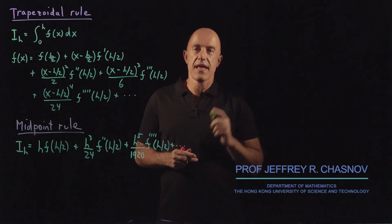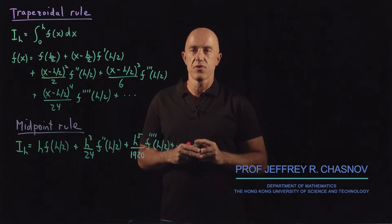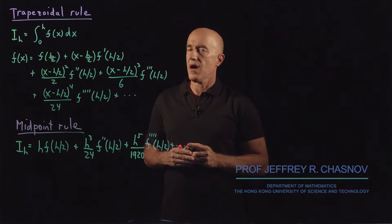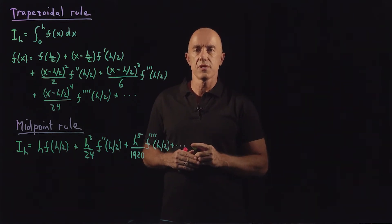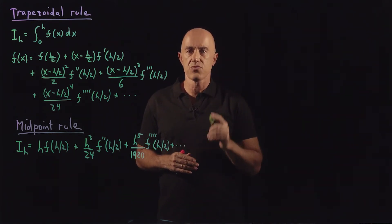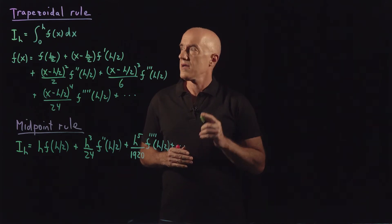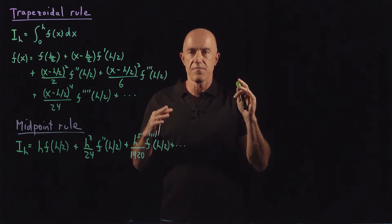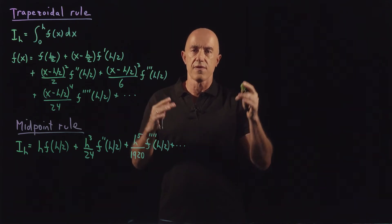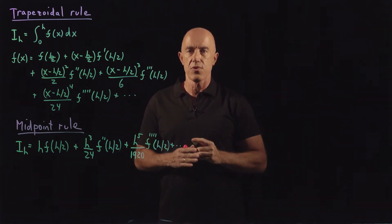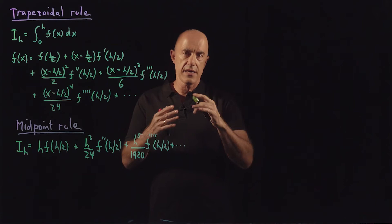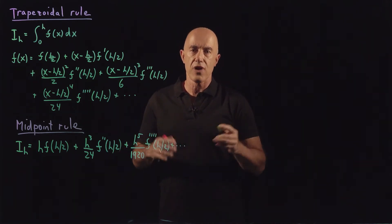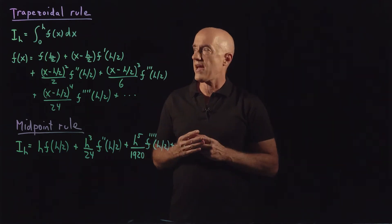We're deriving elementary formulas for doing numerical integration or quadrature. We derived the midpoint rule. The next one up is the trapezoidal rule. The trapezoidal rule uses the value of the function at the two endpoints of the interval by basically approximating the integral by a trapezoid. So let's see how to derive that.